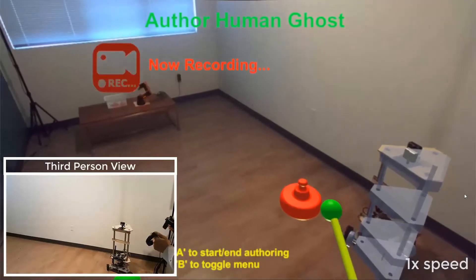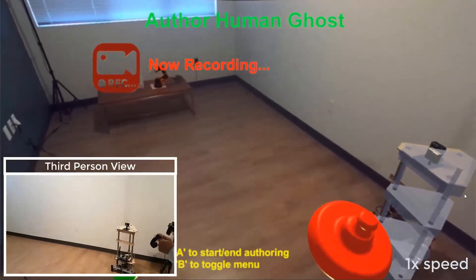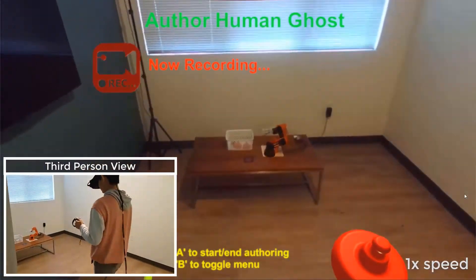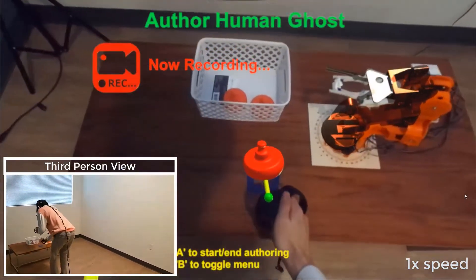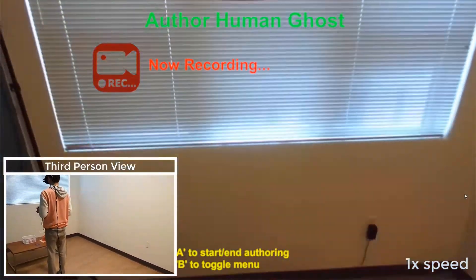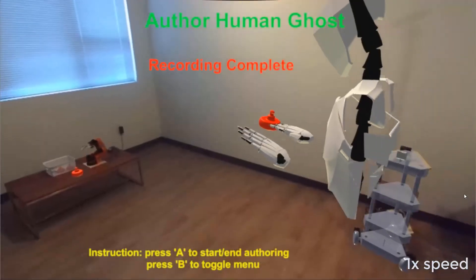Now, we describe the system workflow. After selecting the robot collaborators, user first plays out the human part of the collaboration, with his motion recorded and visualized by an animating ARGhost.